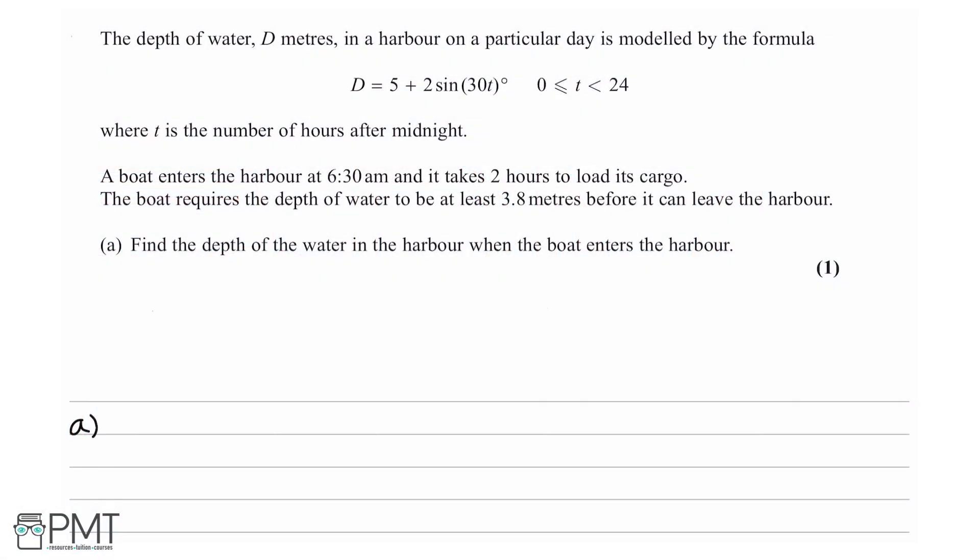We are told the depth of water, d meters, in a harbour on a particular day is modelled by the formula d equals 5 plus 2 sine 30 times t in degrees, where t is between 0 and 24.